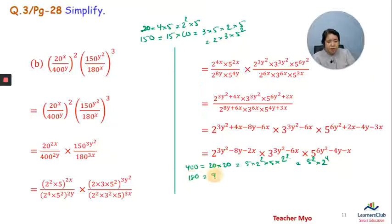180 is 3 squared, 2 squared into 5 squared. So 180 equals 3 squared into 2 squared into 5 squared.